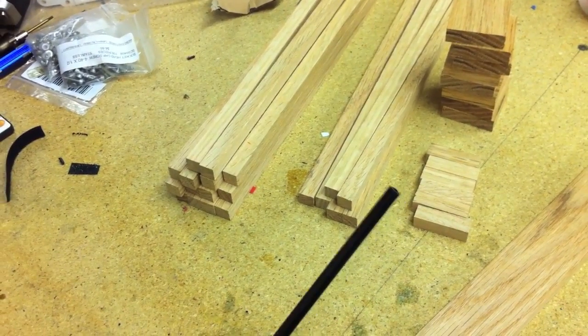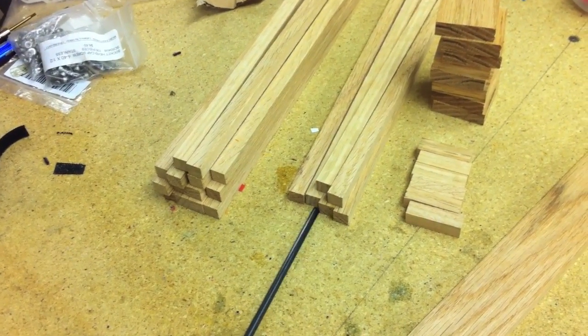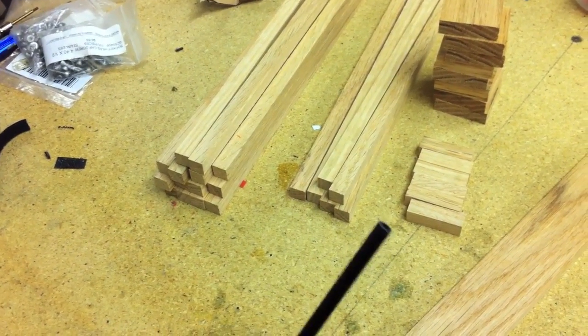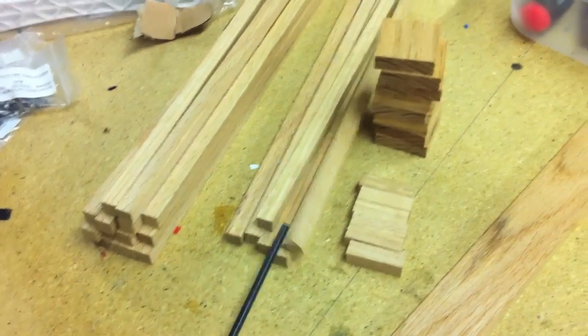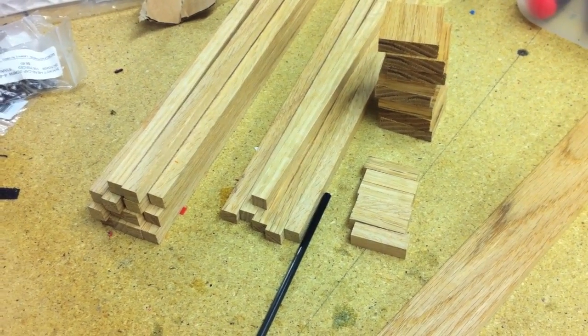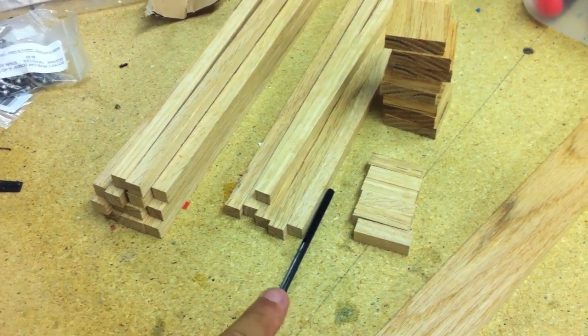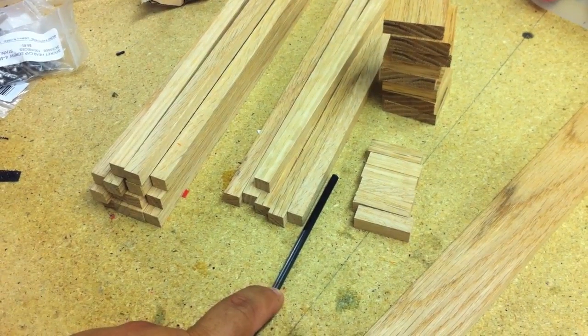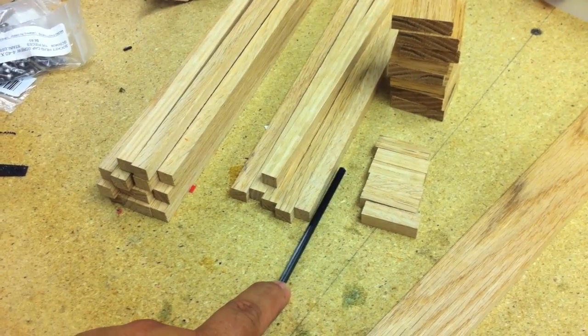We're going to use this carbon fiber tube for the tail shaft. This is a four millimeter carbon fiber tube. I'm going to go in about an inch and a half inside there, and then come out about an inch and a half plus enough for a wheel collar plus enough for spacing, so that'll probably end up making it about three and a quarter.